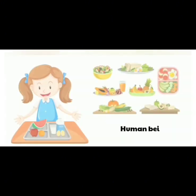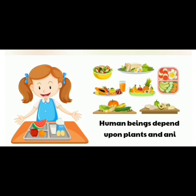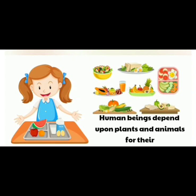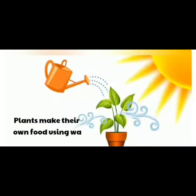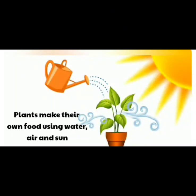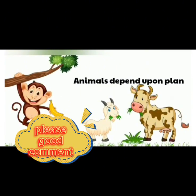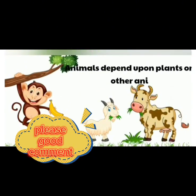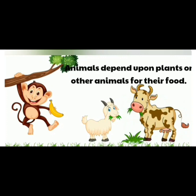Living beings need food and water. Human beings depend upon plants and animals for their food. Plants make their own food using water, air and sunlight. Animals depend upon plants or other animals for their food.